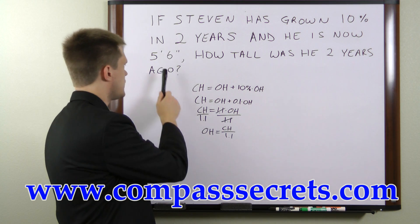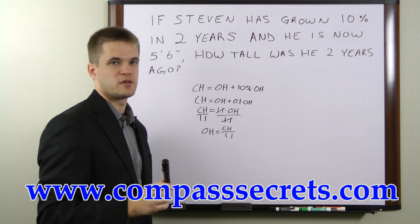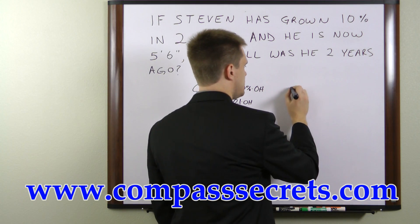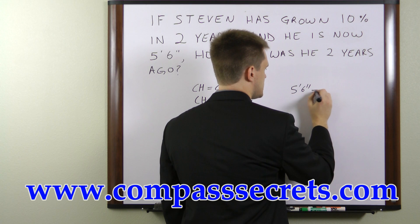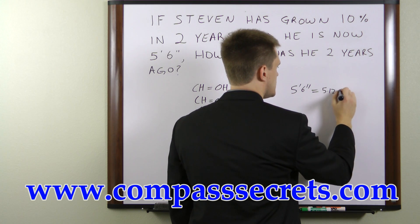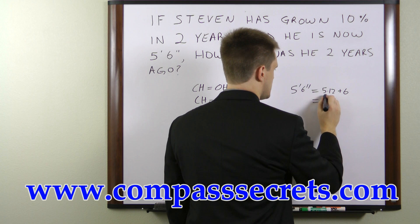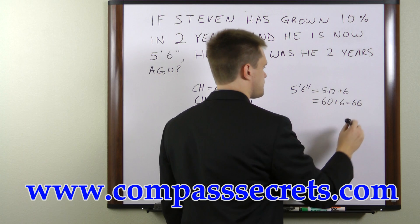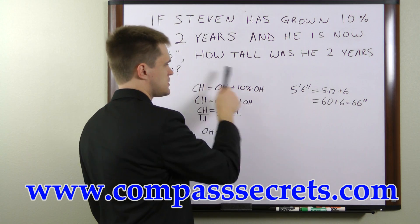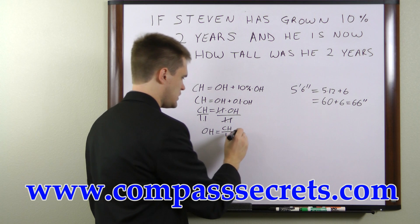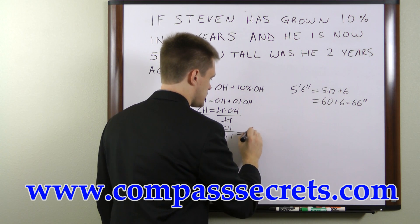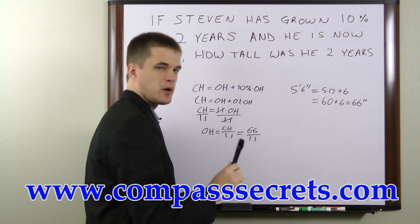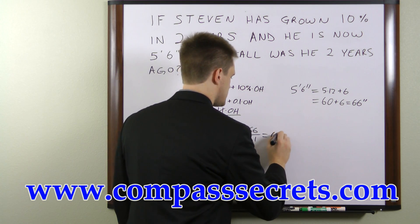Now the current height is given to us in feet and inches, so we need to convert it to just inches before we plug it in. So 5 feet and 6 inches is equal to 5 times 12 plus 6, which is 60 plus 6, equals 66 inches. So we plug in the original height as 66 over 1.1.